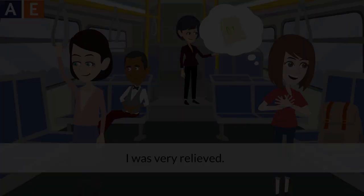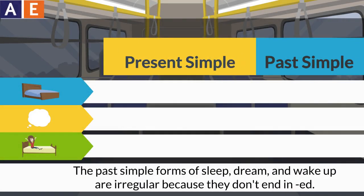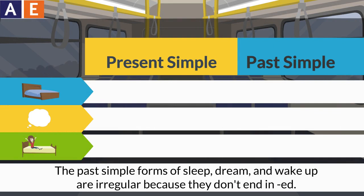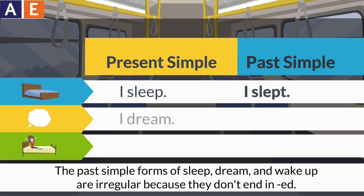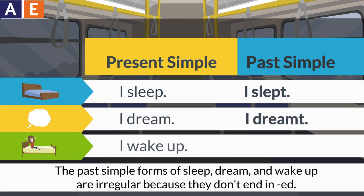The past simple forms of sleep, dream, and wake up are irregular because they don't end in ED. 'I sleep' becomes 'I slept', 'I dream' becomes 'I dreamt', and 'I wake up' becomes 'I woke up'.